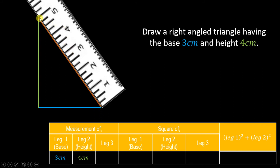The measurement of this leg is coming out to be 5 cm. So now we will write 5 cm in the place of the third length. You can see that the base and height were given to us in the question, but the third leg automatically came out to be 5 cm — that is by default 5 cm.